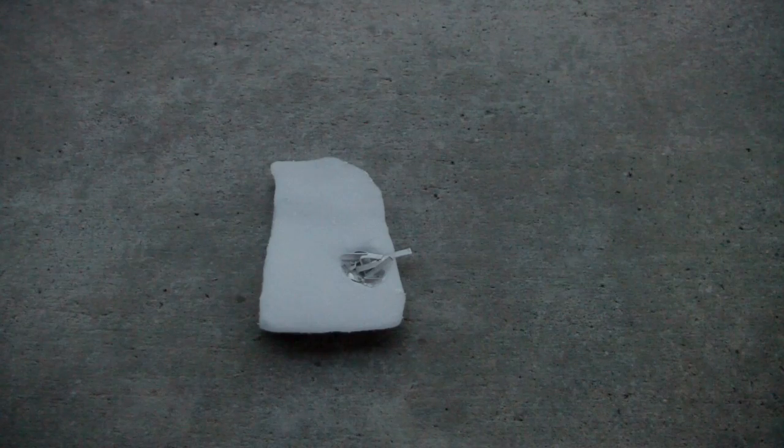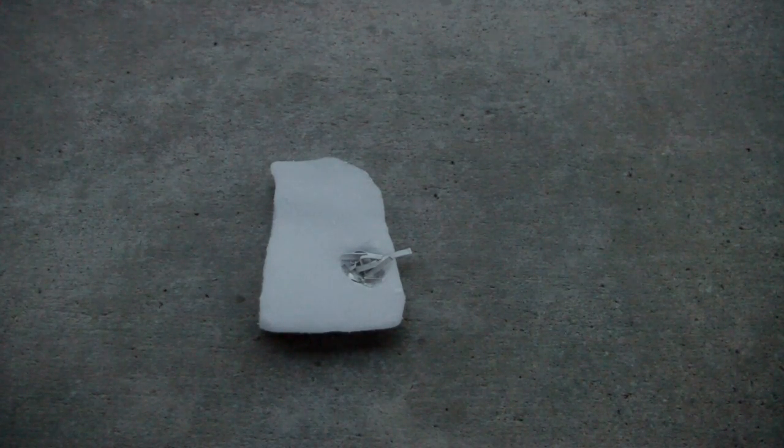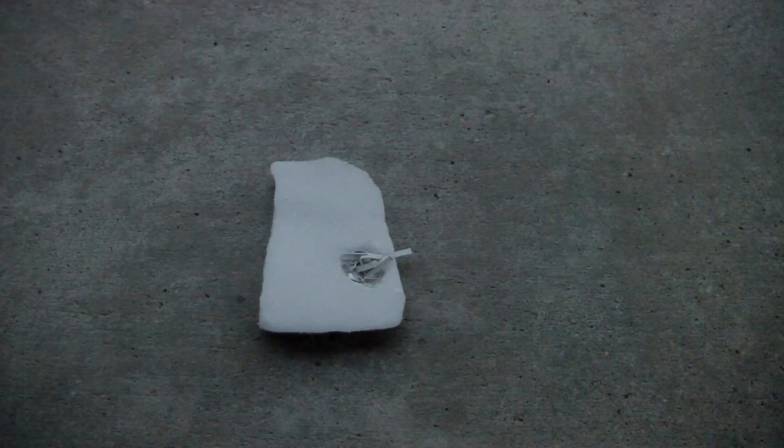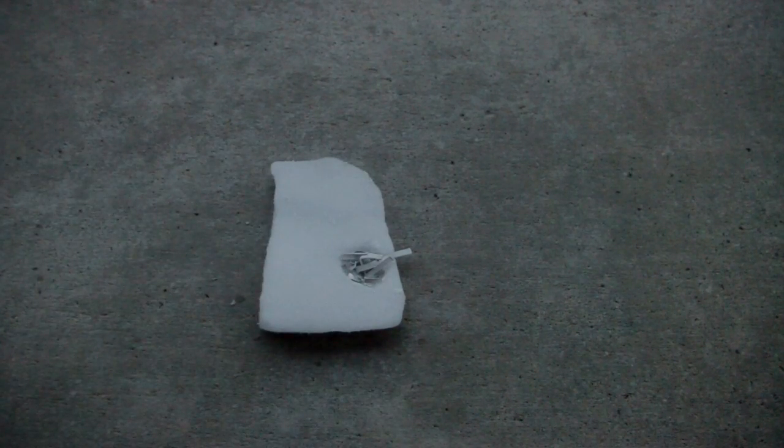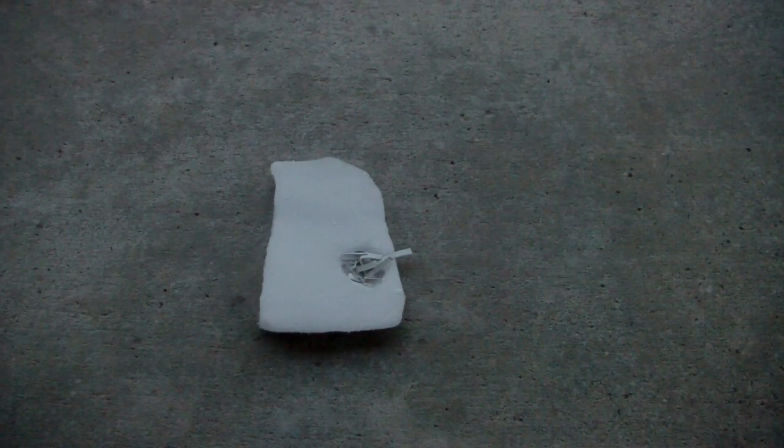So what I have is a block of dry ice into which I've carved a little indentation, and in that I've put some magnesium ribbon. What I'm going to do is light the magnesium ribbon, cover the whole thing with another block of dry ice, and then while it's burning you'll see the change from it burning in an oxygen atmosphere to it burning in a carbon dioxide atmosphere.